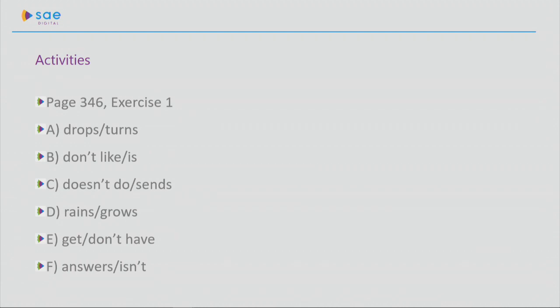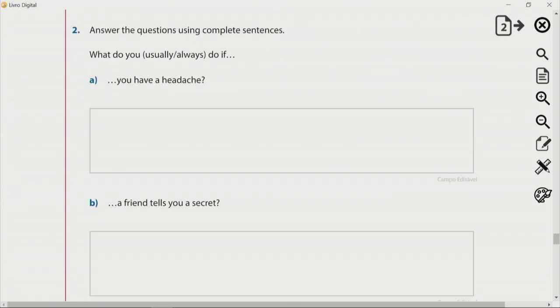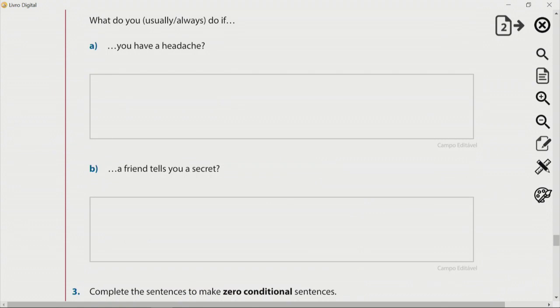So, you can check now, you can pause the video now to check if you like. And now, I want you to do exercise number two, the same page. Answer the questions using complete sentences. Example, what do you usually or always do if you have a headache? You put your answer there, the complete answer. If I have a headache, I... And then what you do. A best friend tells you a secret. If a best friend tells me a secret, I... You will do the same thing for both letter A and letter B. So complete this and then we will check.